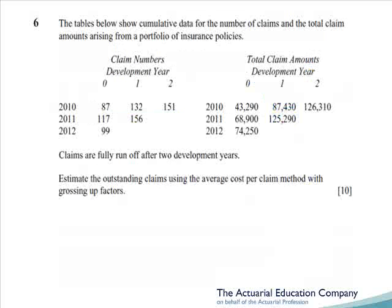And on to question 6, it's a runoff triangle using the average cost per claim method with grossing up factors. Well we've not had one of these since April 2009, but this is disgustingly straightforward, and should have presented absolutely no problems whatsoever to any well prepared candidate, and in fact is our first question without any twists.